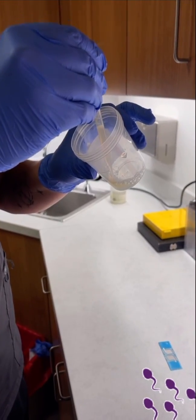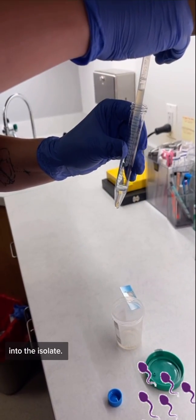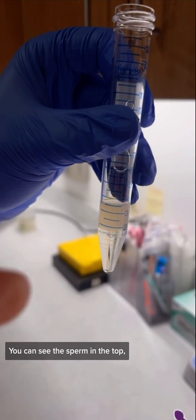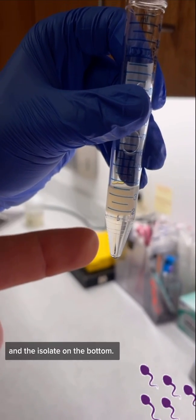We're taking the sample and placing it into the isolate. There it goes. You can see the sperm in the top and the isolate on the bottom.